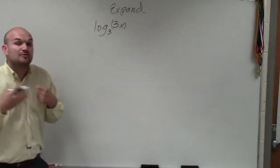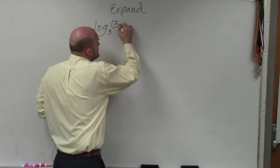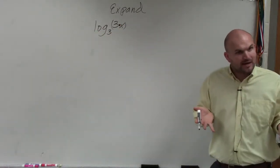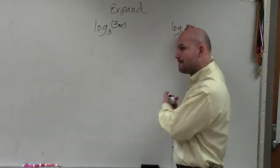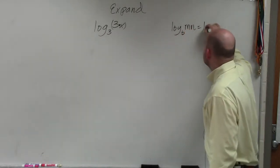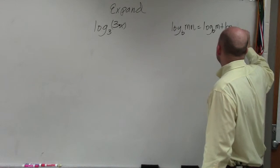So we have log base 3 of 3x. The main important thing I want you guys to understand is these two are being separated by multiplication. So just by applying the rule that I provided to you, the rule of exponents stated that if we had log to some base, where we had m times n, then we can separate it to log base b of m plus log base b of n.